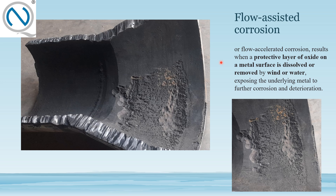Next is flow-assisted corrosion, also called flow-accelerated corrosion. This occurs when the protective oxide layer on the metal surface is dissolved or removed by wind, water, or some kind of flow, exposing the underlying metal to further corrosion and deterioration. This is called flow-assisted corrosion.